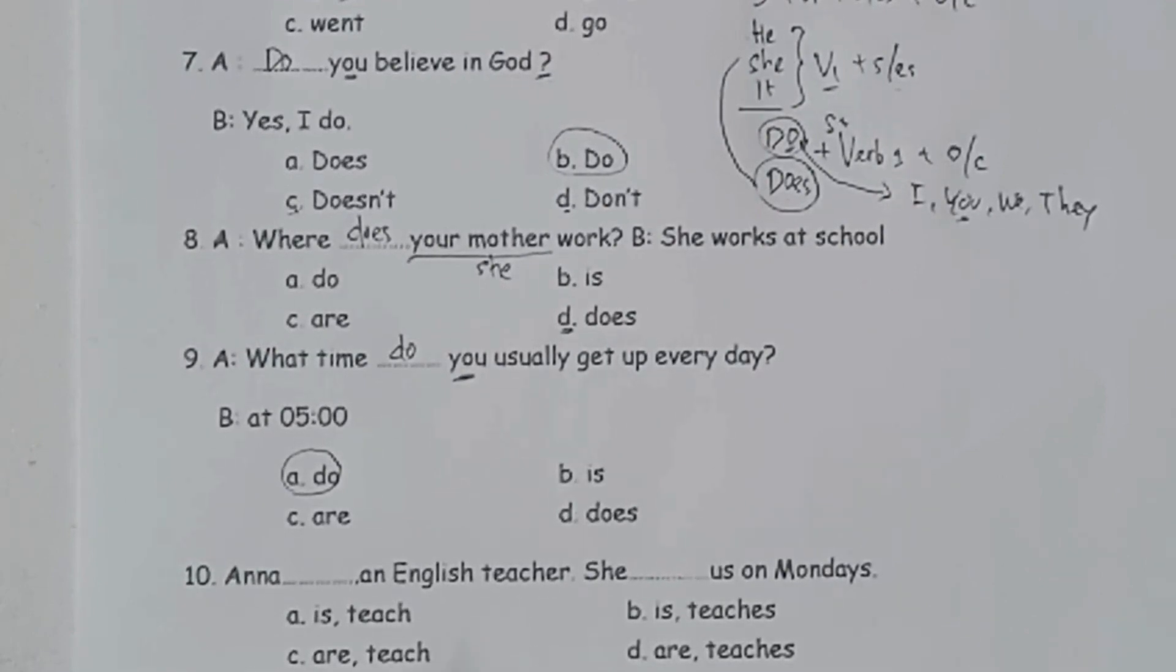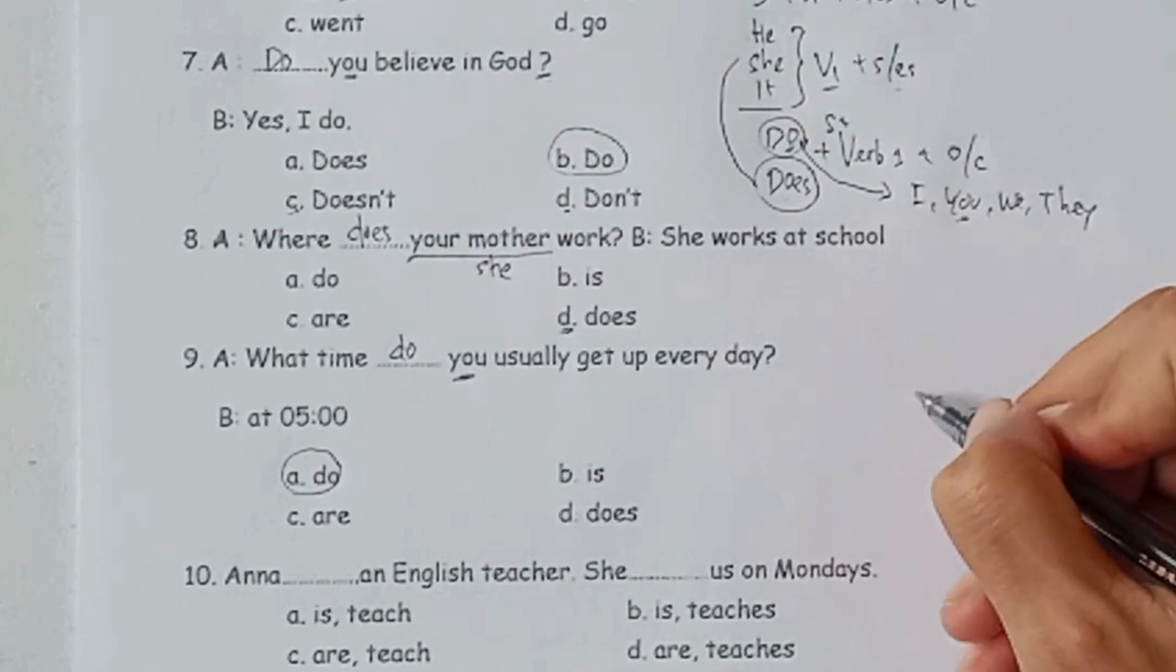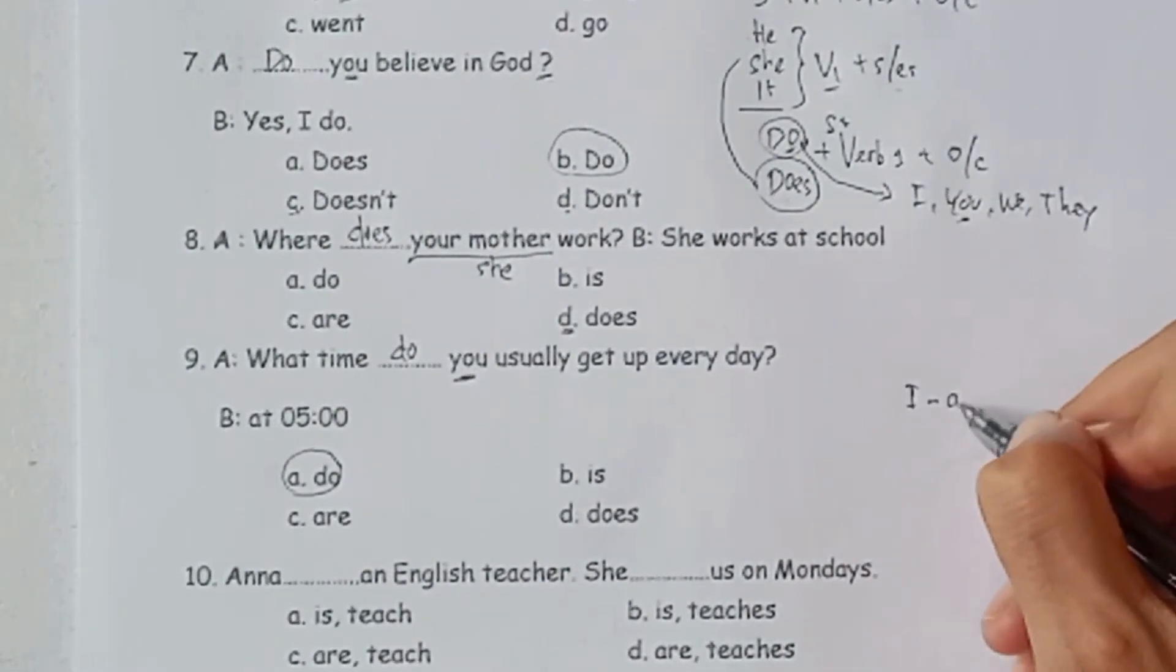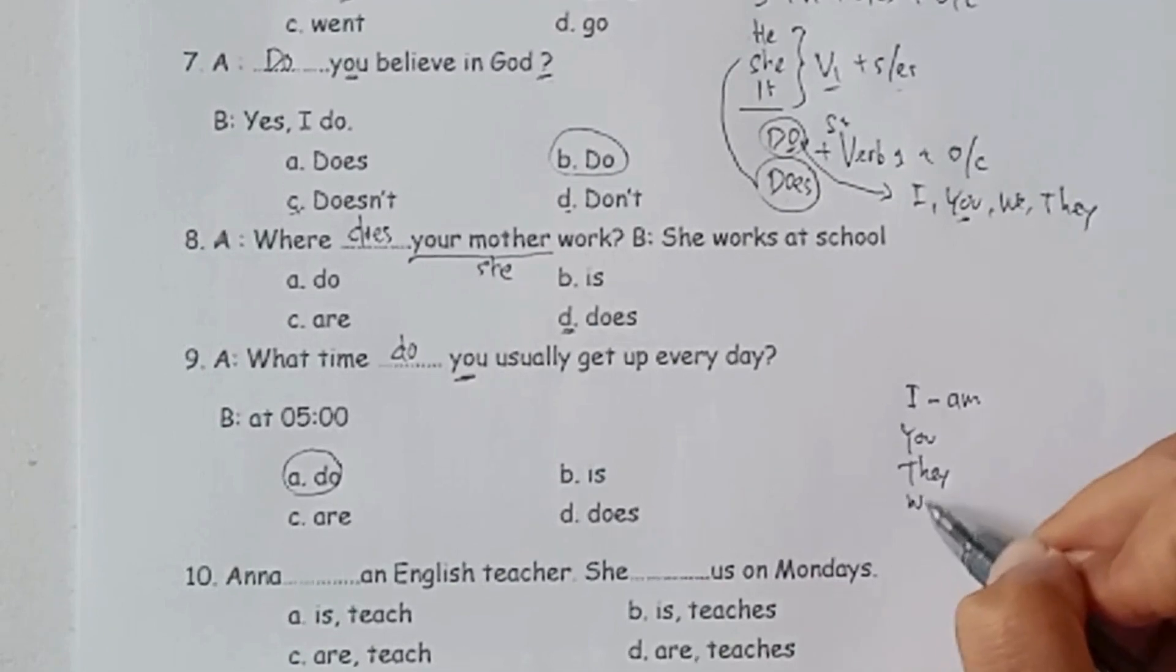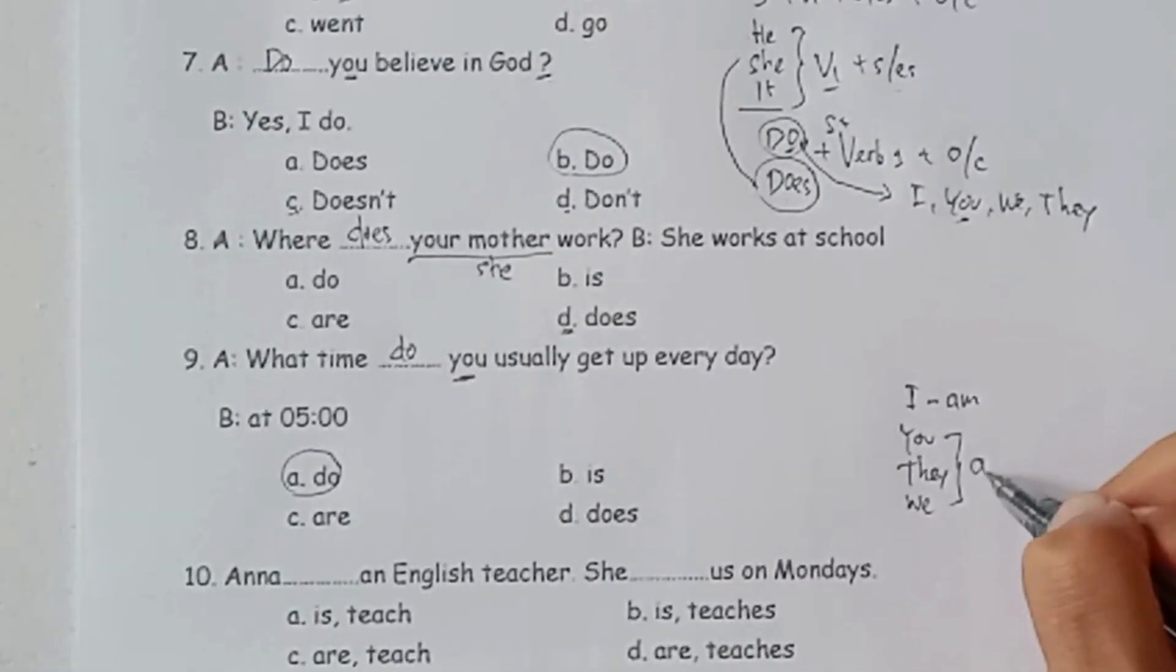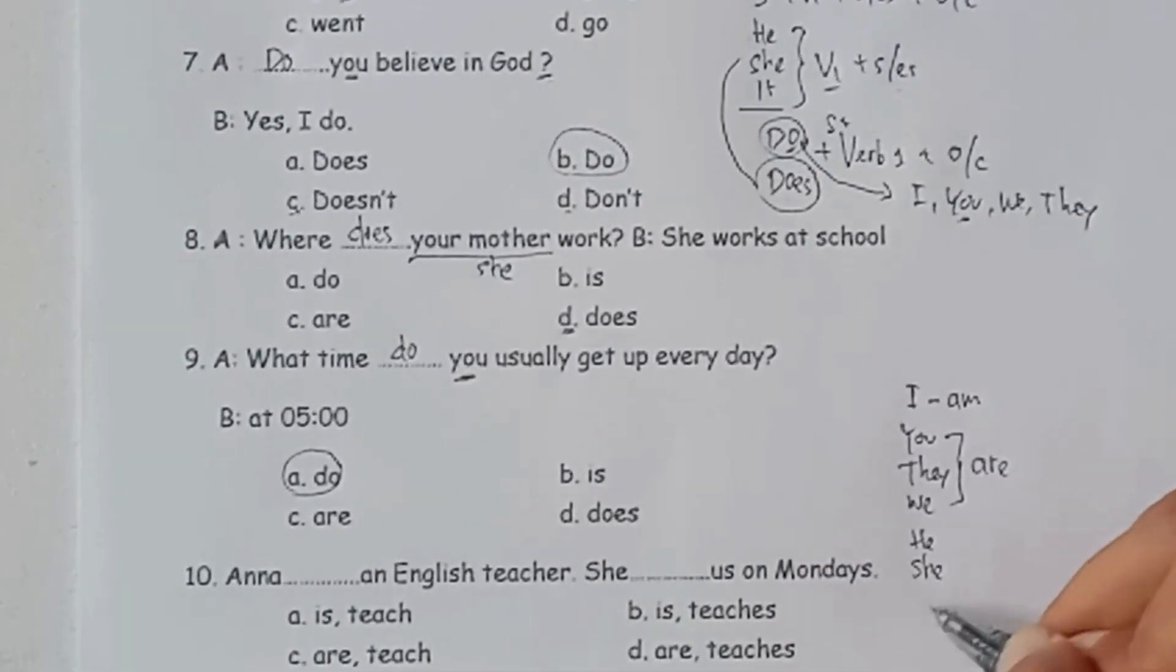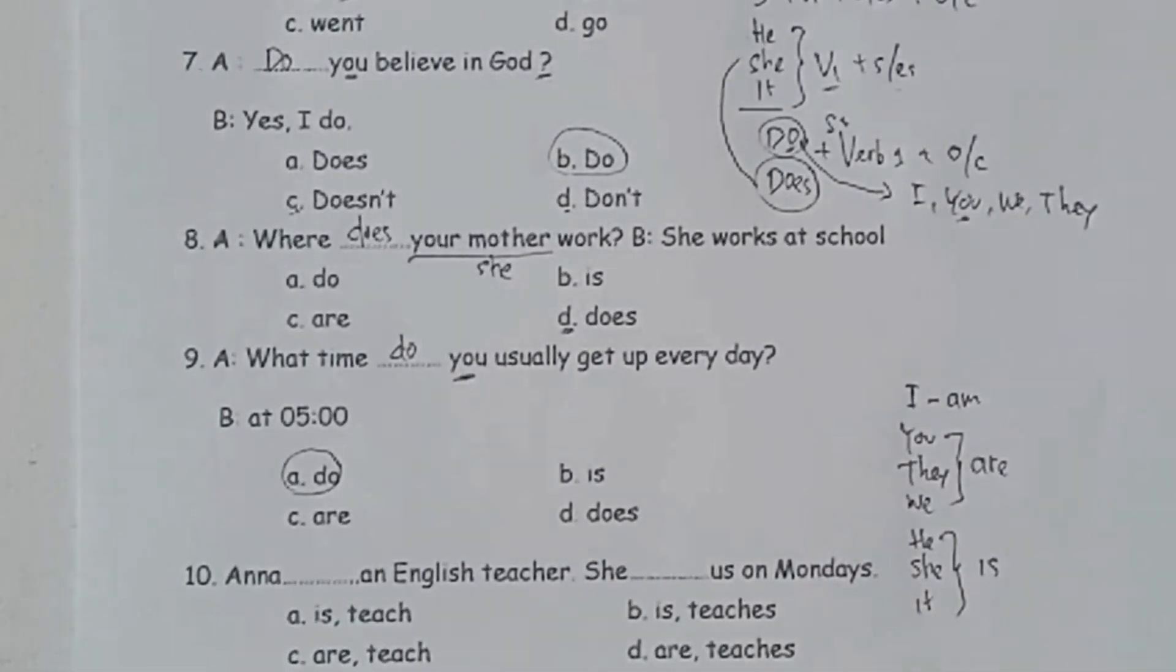Kita masuk ke nomor sepuluh. Di sini ada satu pertanyaan, Ana titik-titik an English teacher, she titik-titik us on Mondays. Di sini pilihannya ada to be is dengan teach, is dengan teaches, are dengan teach, atau are dengan teaches. Ini menarik karena ada kata kerja dan juga ada penggunaan to be. Kita review sedikit tentang penggunaan to be. Subject I pasangannya adalah am. You, they, we pasangannya are. He, she, it pasangannya adalah is. Berarti I am, you are, they are, we are, he is, she is, and it is. Jadi ini to be-nya, ini subject.